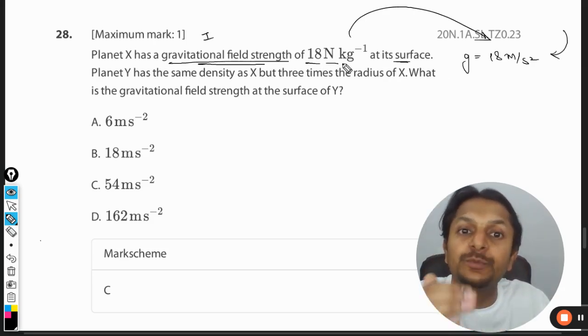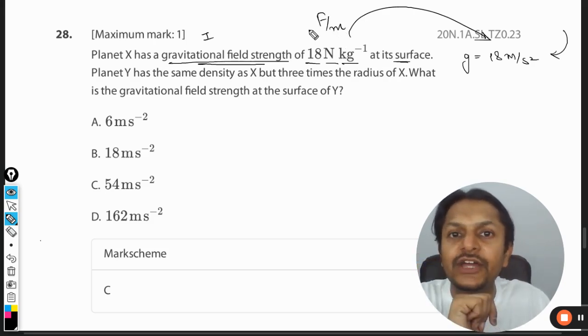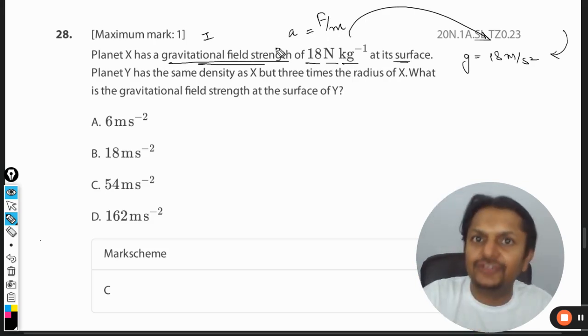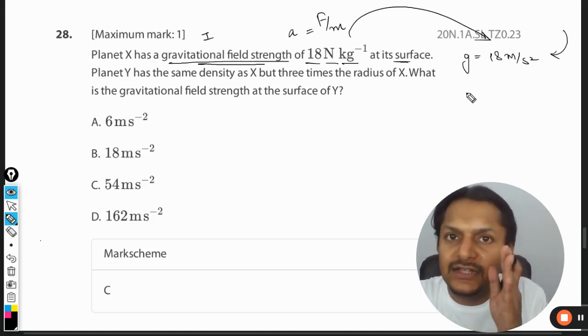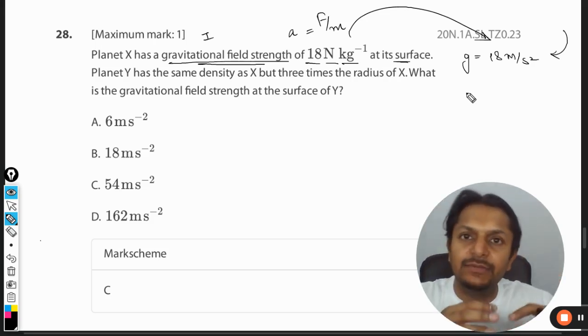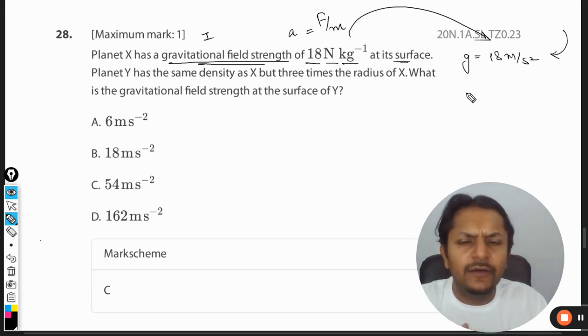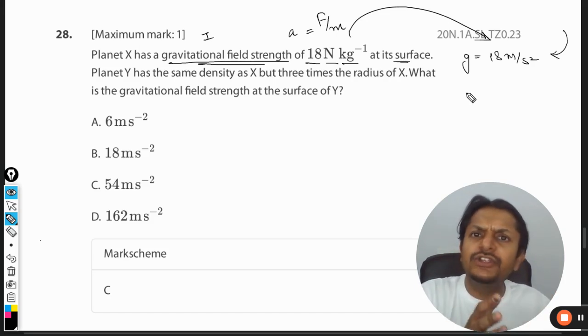This is the acceleration due to gravity and this is gravitational field strength, which is force per unit mass. Force per unit mass is actually the acceleration indeed, and that is why it is g. So there is a very thin difference, a very thin layer that separates these two concepts. They can be taken as same; at the same time they can be treated as two different concepts.